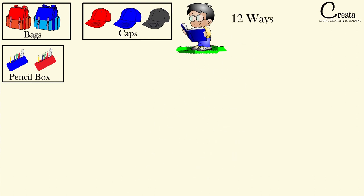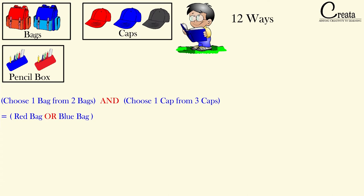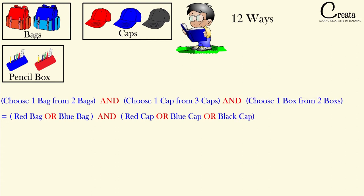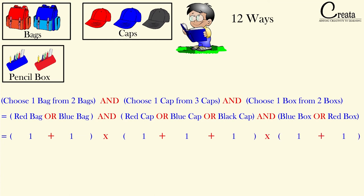Let's check with the multiplication principle. The equation we can form is: we can choose 2 bags — red bag or blue bag — AND 1 cap out of 3 caps — red cap or blue cap or black cap — AND 1 pencil box out of 2 — red box or blue box. Replacing OR with addition and AND with multiplication, we get 2 × 3 × 2 = 12. Again, we got the answer as 12.